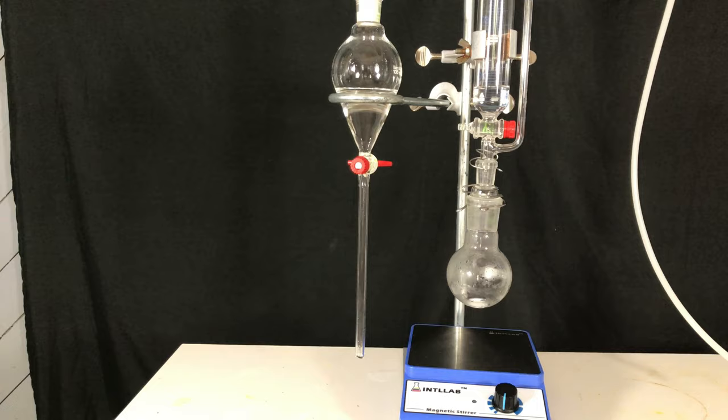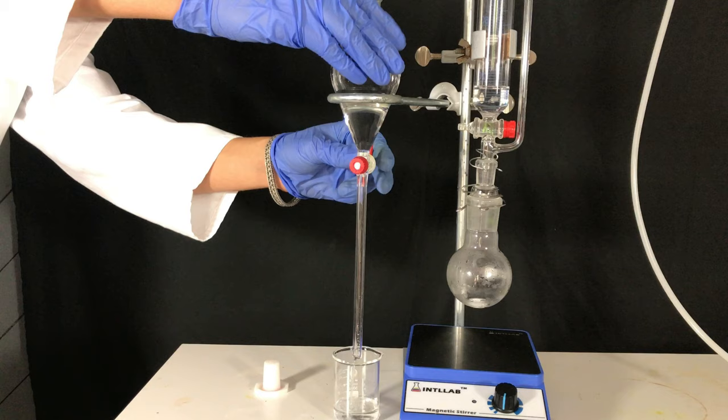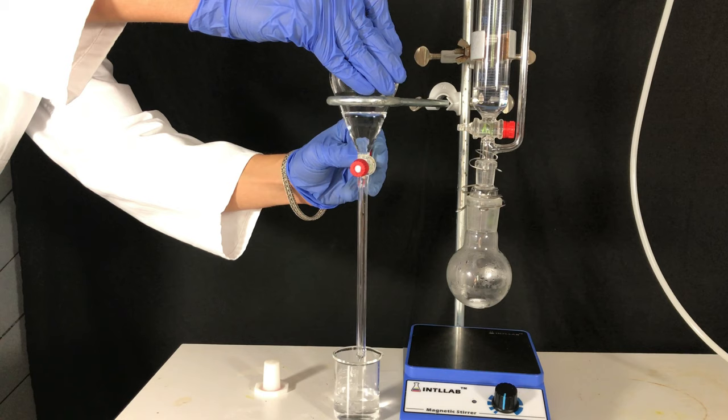The products were allowed to separate. Then the bottom aqueous layer was drained off. The aqueous layer should contain water, hydrochloric acid, acetic acid and also some isopropyl acetate and isopropanol.